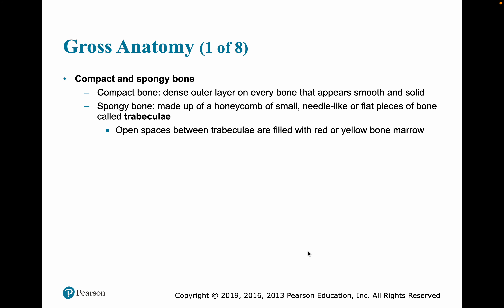We'll start with the gross anatomy of a bone. Gross anatomy gives us two different types of bone tissue: a compact form and a spongy form. A bone as an organ is going to contain both compact and spongy bone — these are not different bones, but different organizations of bone tissue within a bone.